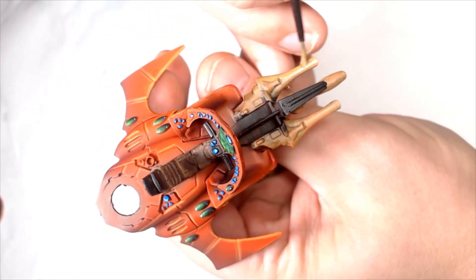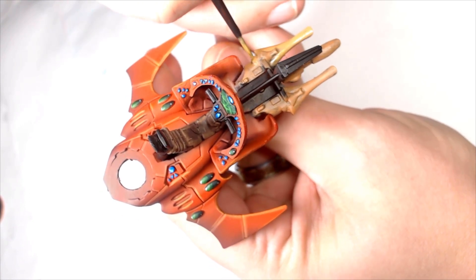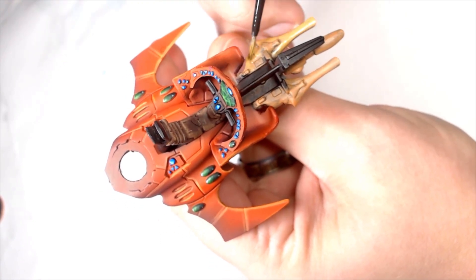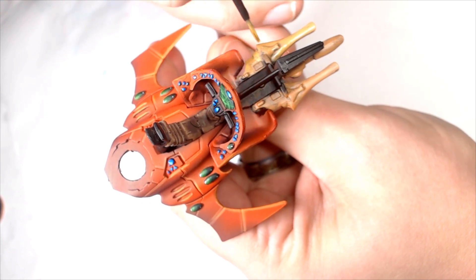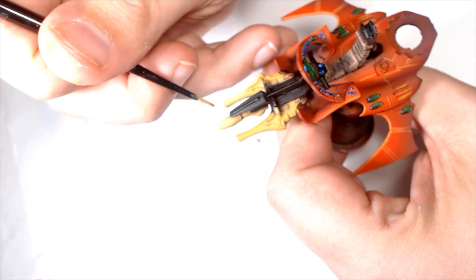So after getting a good coverage of the Blackert Brown I'm using Desert Yellow now. And this is just going straight over, thin down as always. I'm just bringing up some of that darker brown to a sort of a yellow color, so we can make it a nice bone from there.